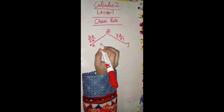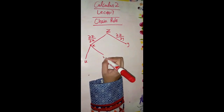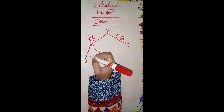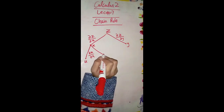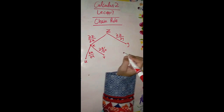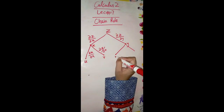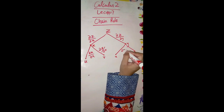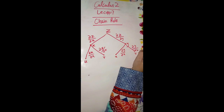For x we will reach two other variables: u and v. We can take ∂x/∂u and ∂x/∂v. Similarly with y we will have two variables u and v, giving us ∂y/∂u and ∂y/∂v.